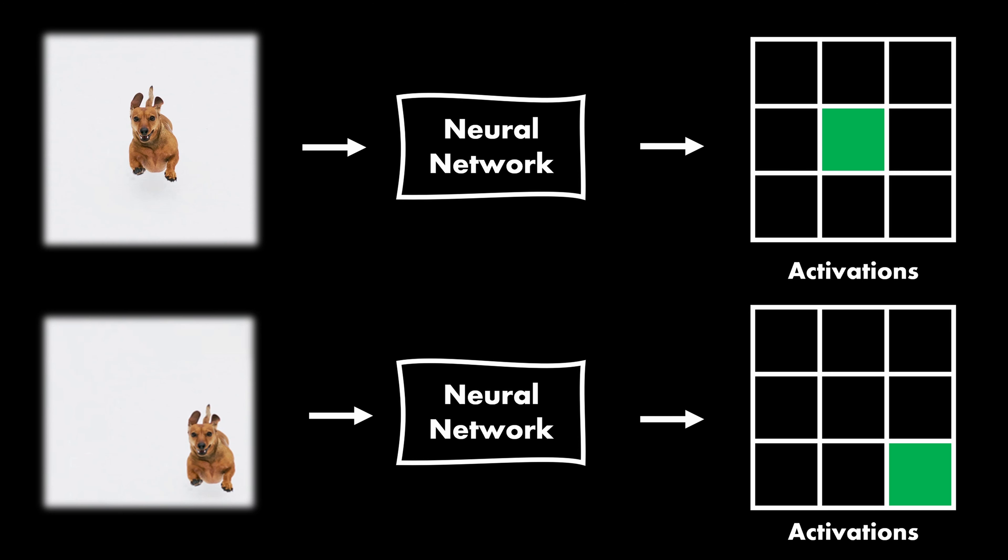Equivariance simply means that when the pattern in the input changes, the output changes in an equivalent proportion. For example, the feature activation maps in a CNN would be translated in a similar fashion like this. Okay, so that is equivariance.